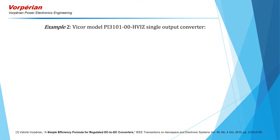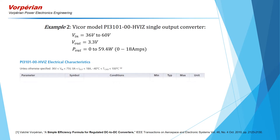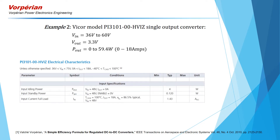In our second example, we consider a COTS converter built by Vicor. It is a regulated single output converter which has an input voltage range from 36 to 60 volts, an output voltage of 3.3 volts, and a maximum output power of about 60 watts. We do not know the details of the design of this converter, but we do know its electrical characteristics as reported in its datasheet. The efficiency is 86.5% at nominal input voltage and maximum output power, and the idling input power is 4 watts — that is, the input power at no output load.